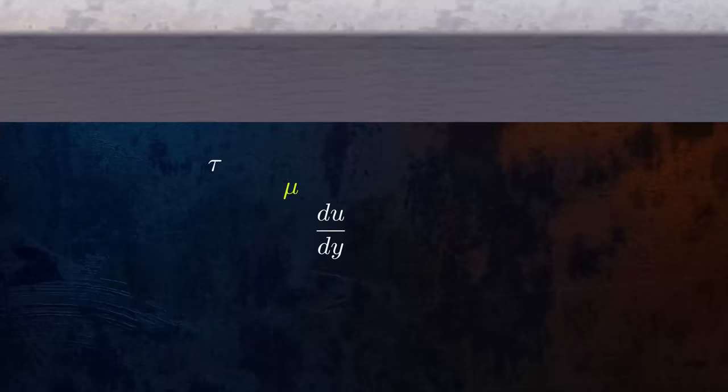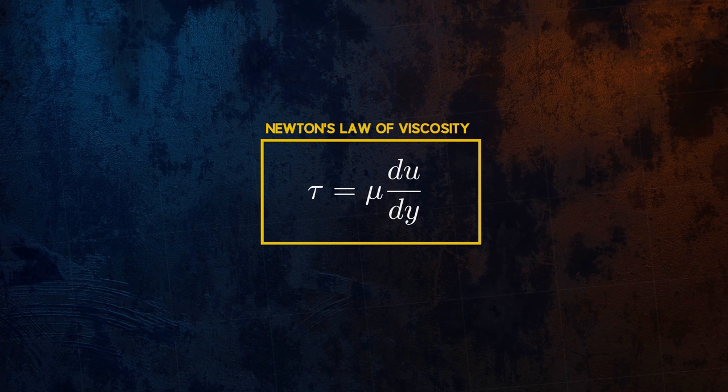We can express the linear relationship using this equation. This is called Newton's law of viscosity, and fluids that obey it are said to be Newtonian. It describes how easily a fluid will flow.